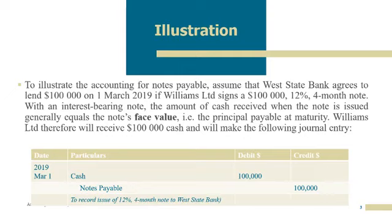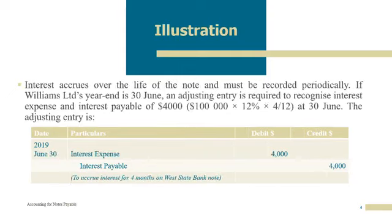Take note of the interest rate here. It mentioned 12% per month note, but we will assume that 12% is for the whole year payment. Because we only have a 4-month note, we have to calculate only for 4 months on payment. We will see the next illustration where we accrue interest.